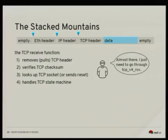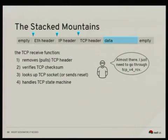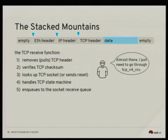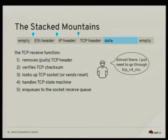Once we have the TCP socket, we handle the TCP state machine — the socket can be in various states. This is a complex topic for a presentation of its own. Assuming the packet is to be received by the application, we enqueue the packet to the socket's receive queue. Each socket has a receive queue attached, and arriving packets are appended to the end.